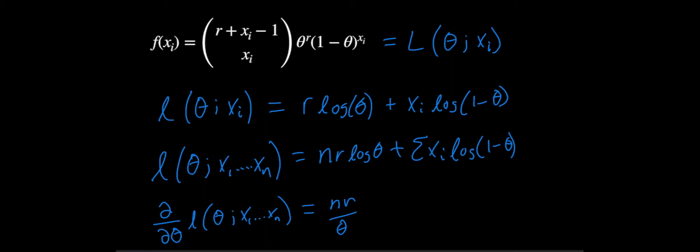So it's 1 over 1 minus theta times minus 1, because the derivative of 1 minus theta is minus 1. So that's going to be minus sum of the x i over 1 minus theta.